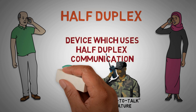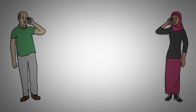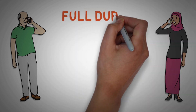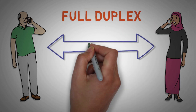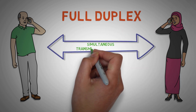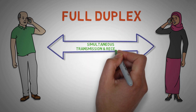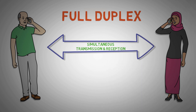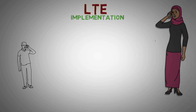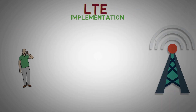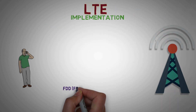Full duplex stands for simultaneous communication between two parties, which means both parties can interact freely. Now let us see how it is implemented in LTE — Long-Term Evolution.